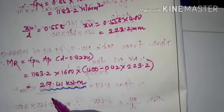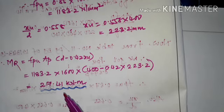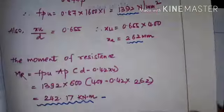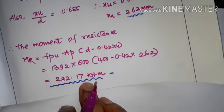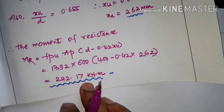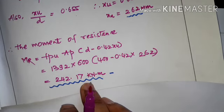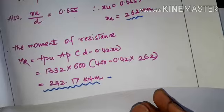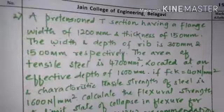For post-tension, the moment of resistance is 217.41 kN·m, and for pre-tension it was 242.17 kN·m. These values are more or less equal. This completes the first problem.